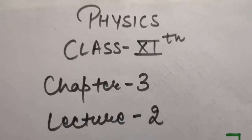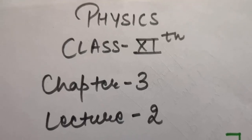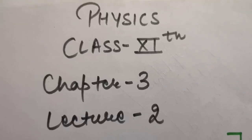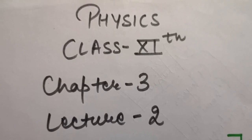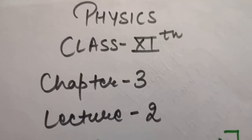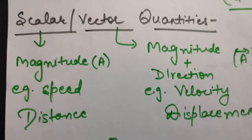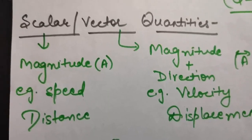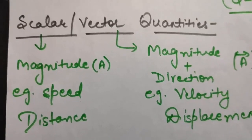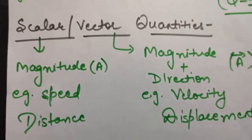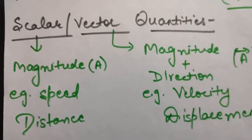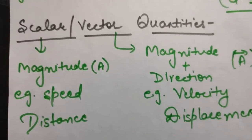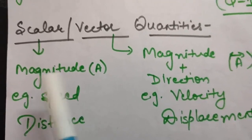Good morning students, this is physics class 11th chapter number 3, lecture number 2. For today's lecture, the first topic is scalar and vector quantities.